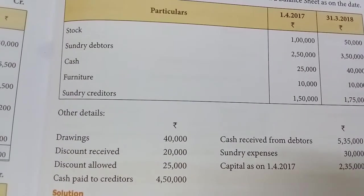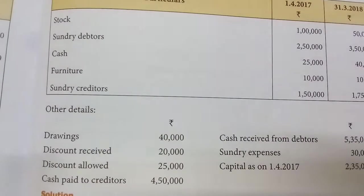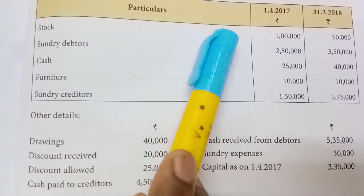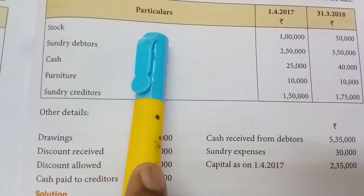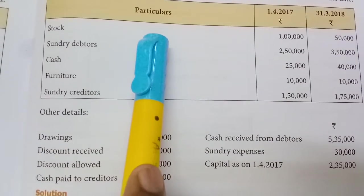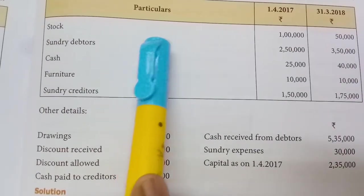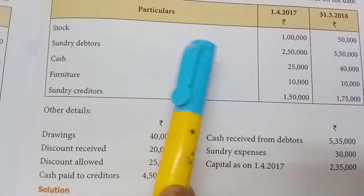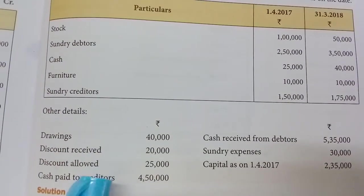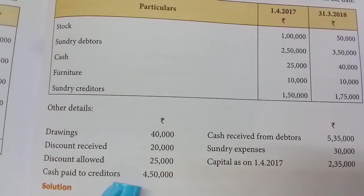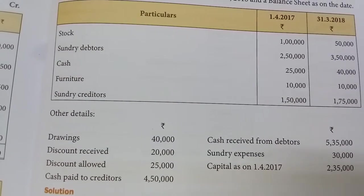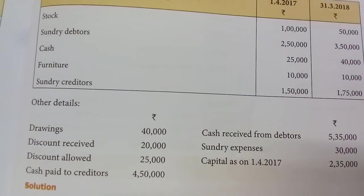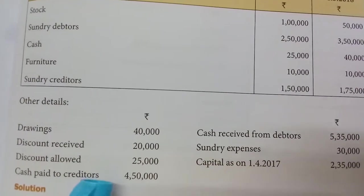First we will prepare the debtors account. The main items we need for the trading account are: opening stock — which is available — and purchases. Opening stock and closing stock are available, but purchases and sales are not. That is why we need to prepare credit purchases and credit sales from the total debtors account and total creditors account. After calculating purchases and sales, we will prepare the final accounts.